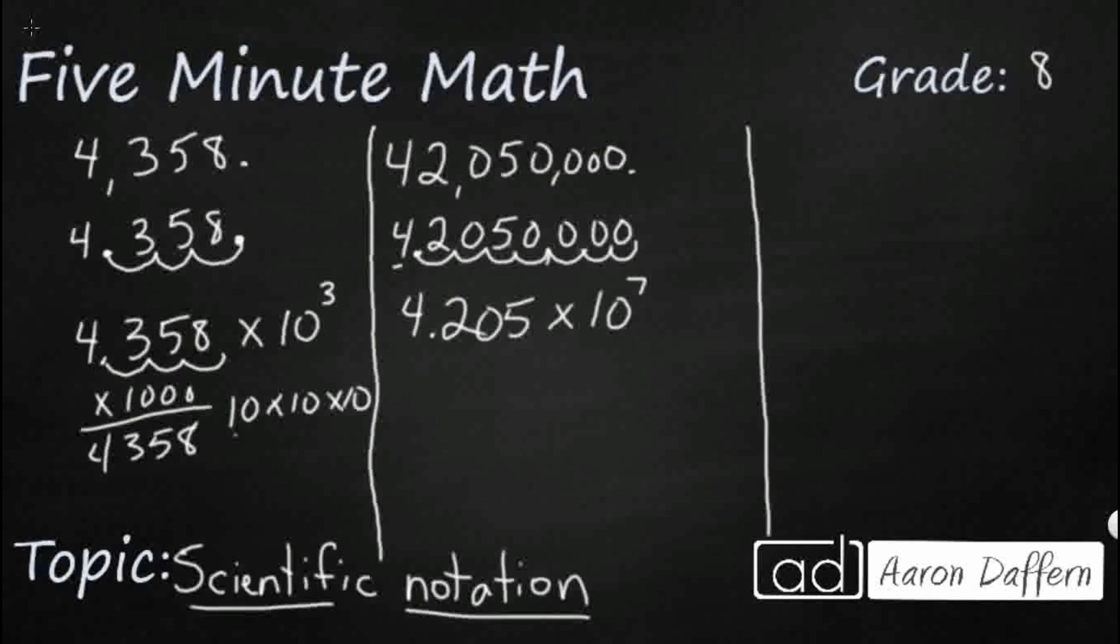So that would be times 10 seven times. And so this 4.205 times 10 to the seventh is the scientific notation for this much larger number, 42 million, 50,000. And we do that simply because the numbers we're going to start working with are going to be extremely large, or sometimes they're going to be extremely small.